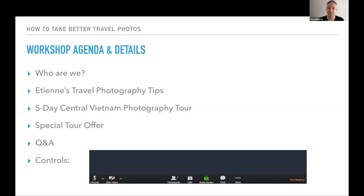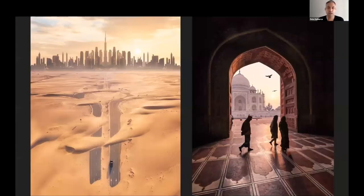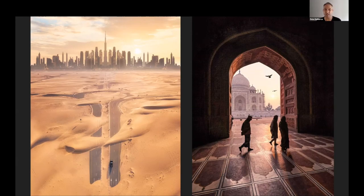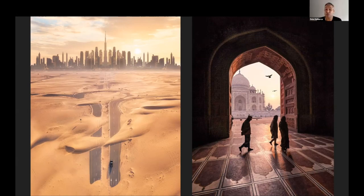My name is Pete DeMarco. I'm primarily a landscape photographer — I love shooting cityscapes, architecture, and I use my drone a lot. The photo on the left is from Dubai, shot with my drone; the one on the right is from India. I also like shooting people and making environmental portraits.